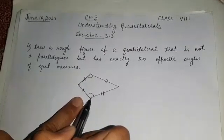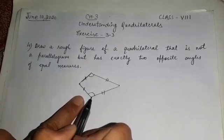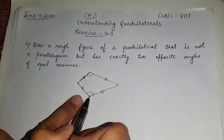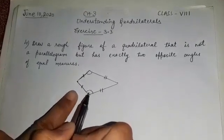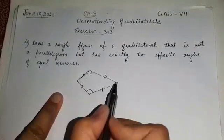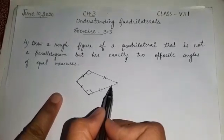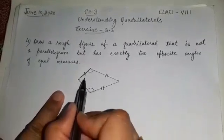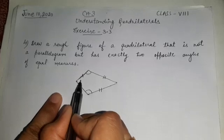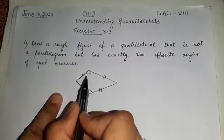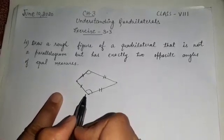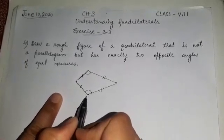So this is an example of a quadrilateral where one pair of opposite angles have equal measurement and it is not a parallelogram, because in a parallelogram both pairs of opposite angles are equal. This angle and this angle are not equal to each other in a kite — only these two angles are equal to each other.